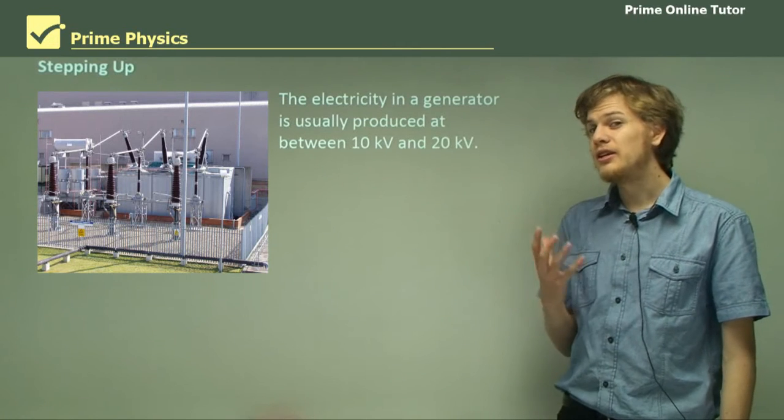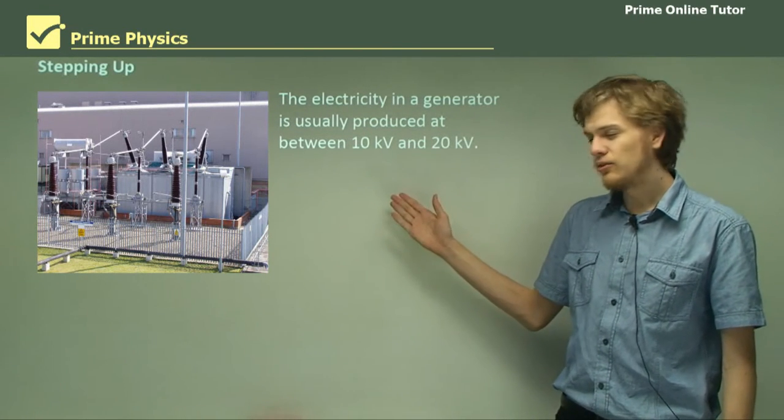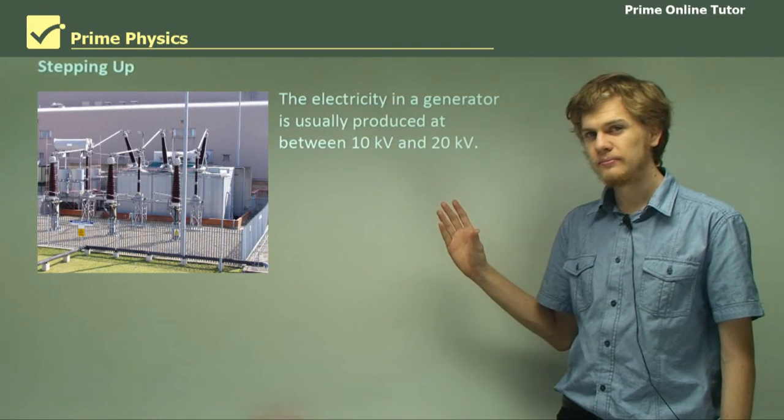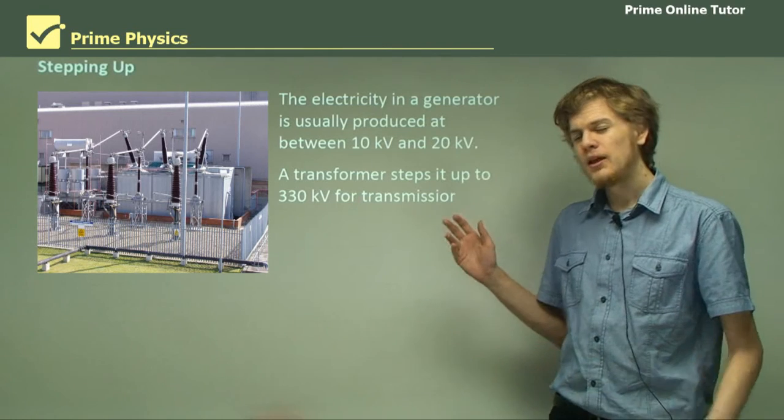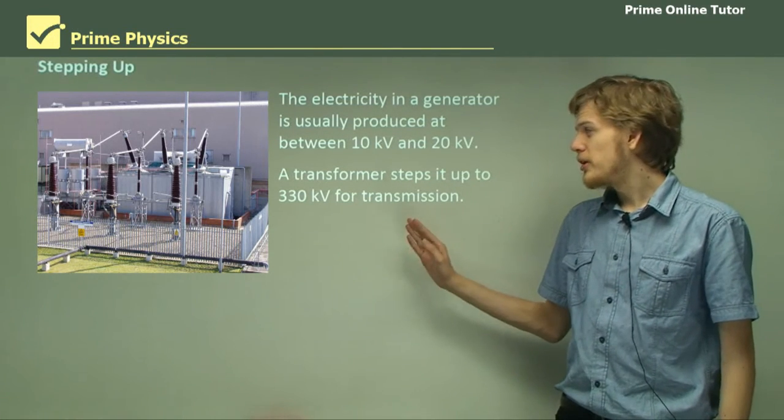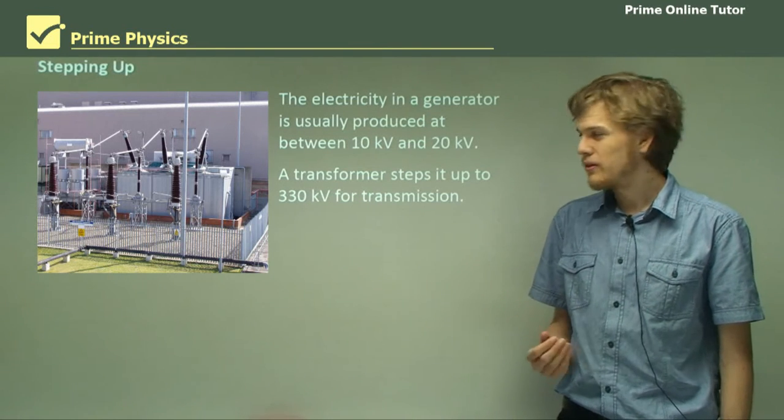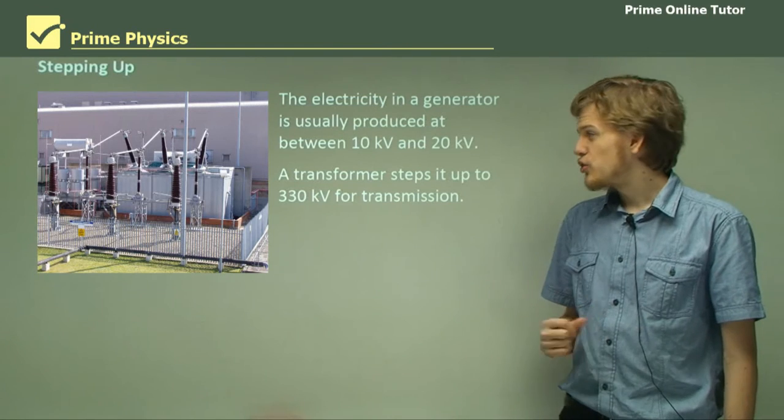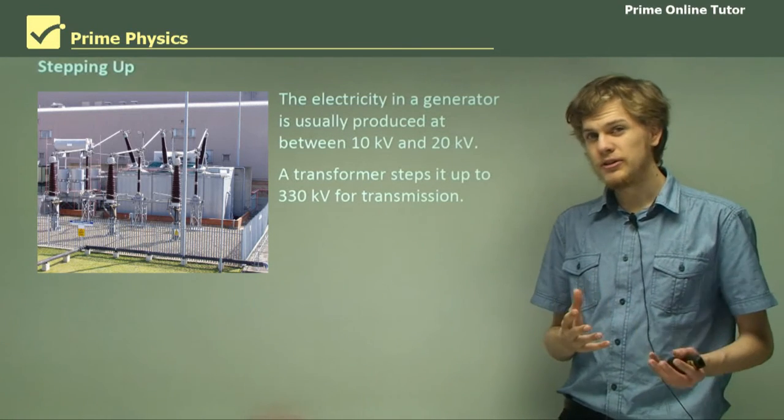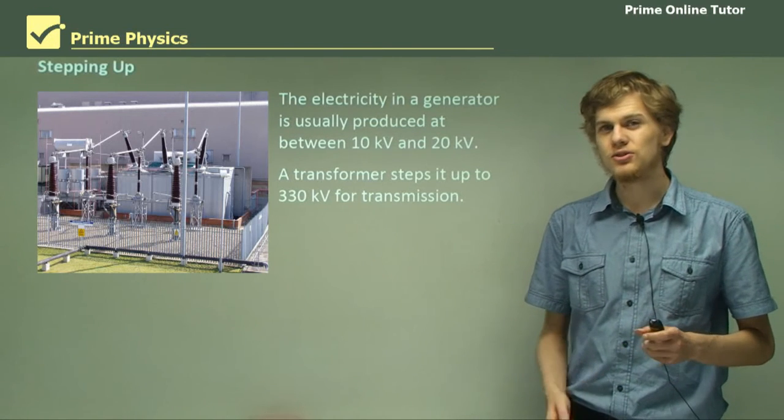Now the electricity in a generator is usually generated in the neighborhood of between 10 kilovolts and 20 kilovolts. A transformer will step this up to 330 kilovolts, that is 330,000 volts before it's transmitted long distance. This huge increase in voltage greatly decreases the current and therefore the energy lost as it's transmitted.